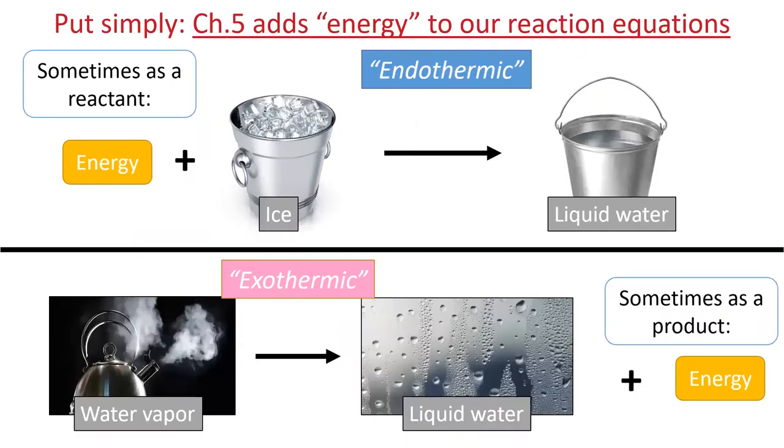In chapter five, we will be thinking a lot about energy, and our focus will be to add energy to our reaction equations. Sometimes, energy will be a reactant, such as in our melting ice. We would call this process endothermic.